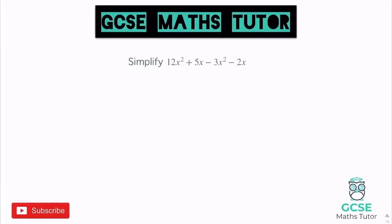We've got some x² pieces and some x pieces. Although all pieces contain x, the x² pieces are treated separately from the plain x pieces. Looking at the x² pieces: 12x² minus 3x² leaves 9x². Looking at the x pieces: 5x minus 2x leaves 3x, which is positive 3x. So we leave it as 9x² + 3x. We can't join an x² and a plain x piece — they stay separate.